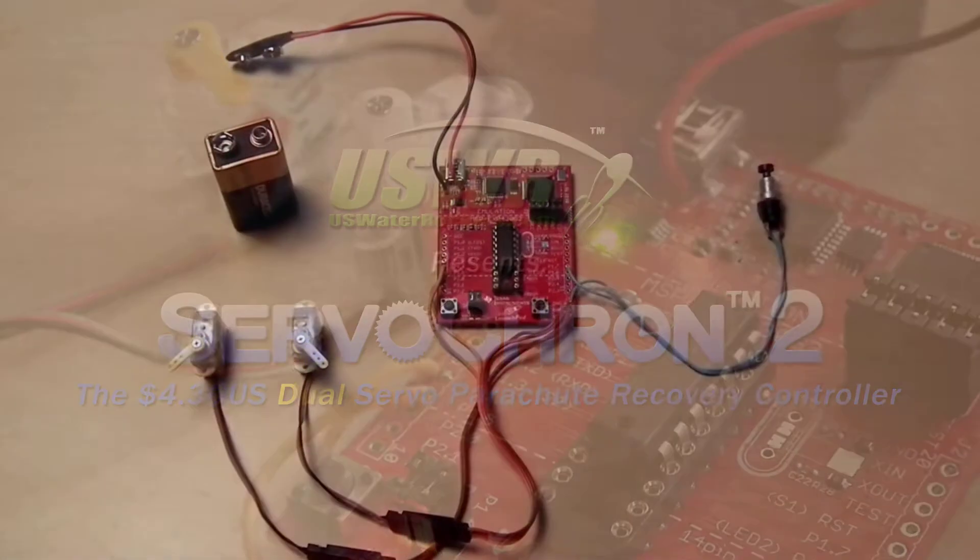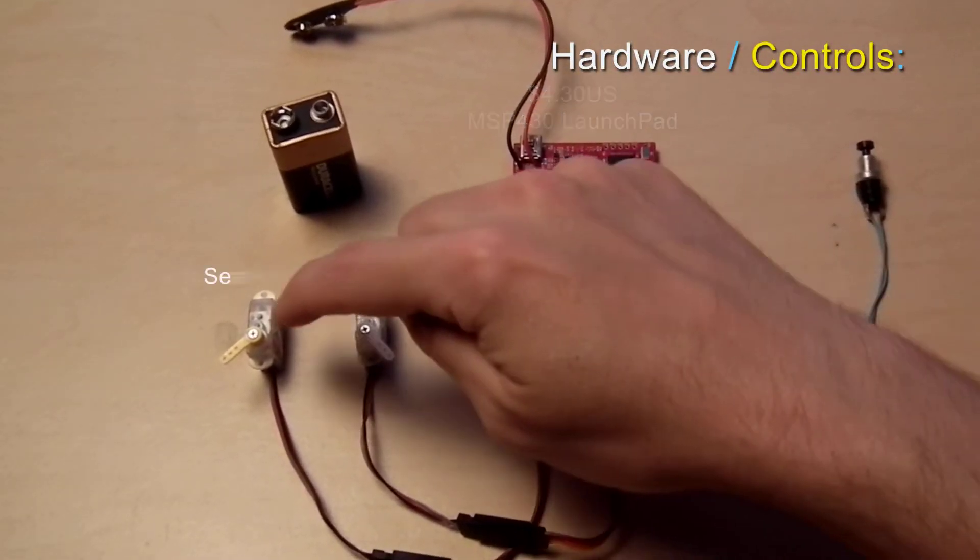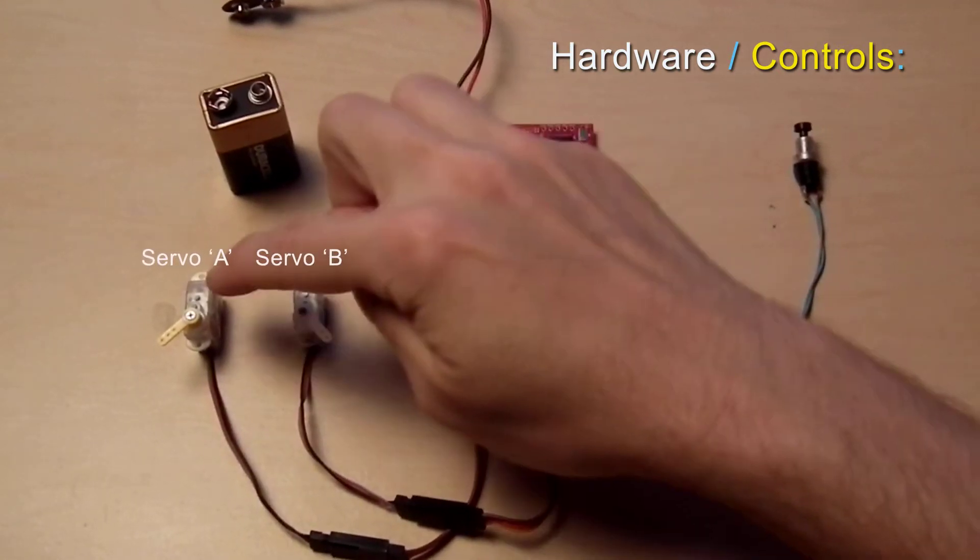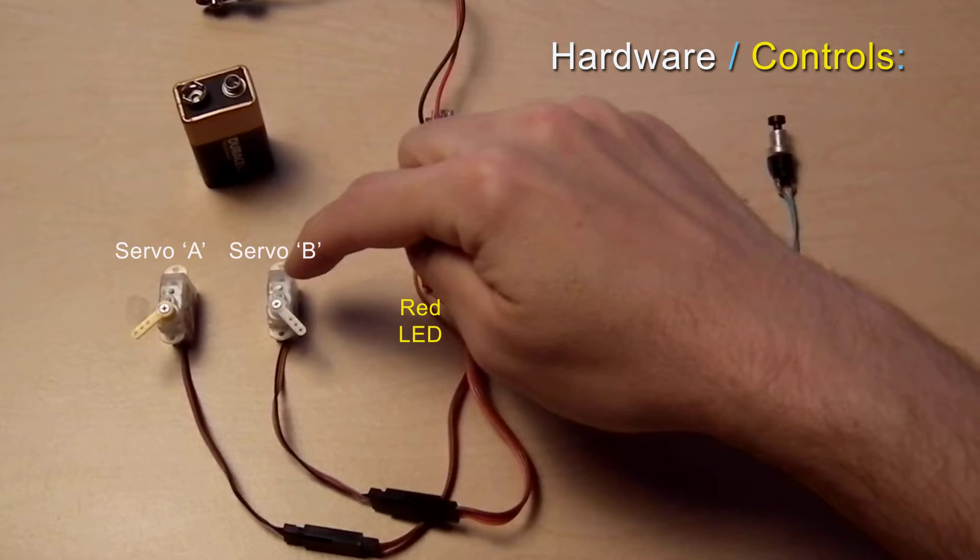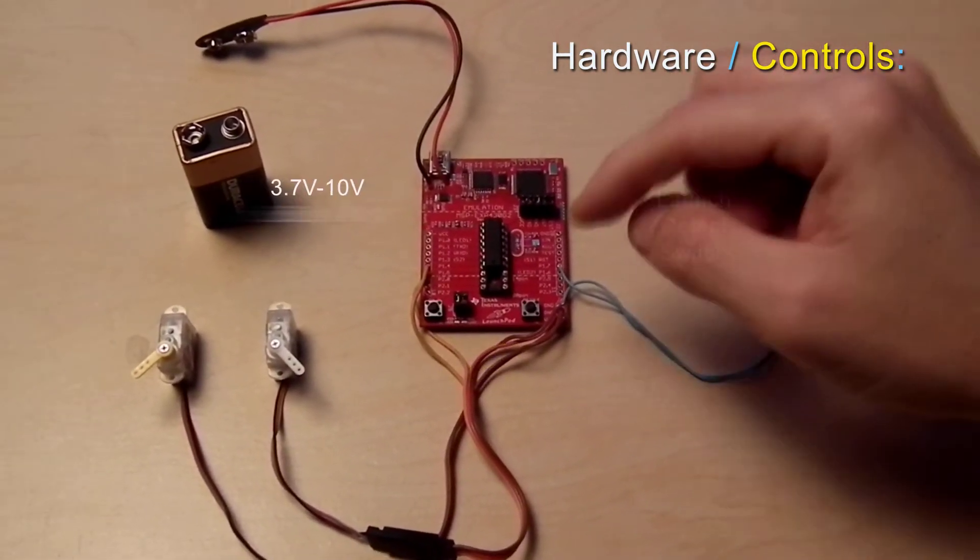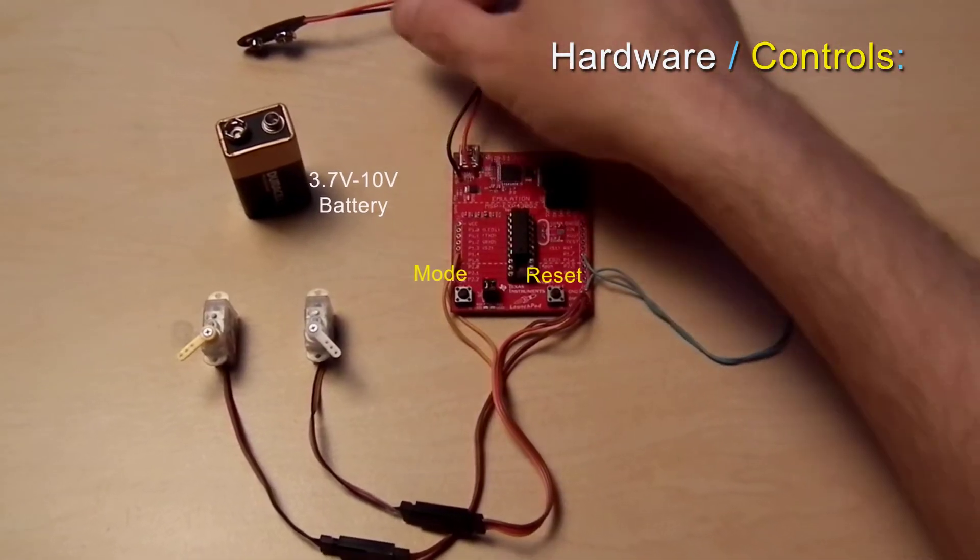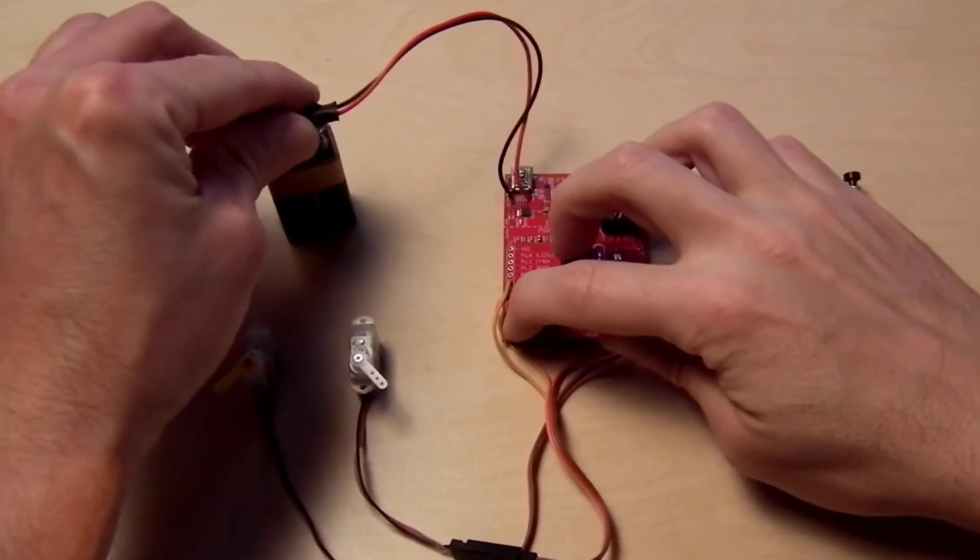The Servocron 2 consists of an MSP 430 Launchpad board connected to dual servos: servo A and servo B. Servo A is associated with the red LED and servo B with a green LED. There is also a launch detect trigger switch, mode and reset buttons, and a battery providing 3.7 to 10 volts.